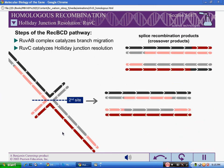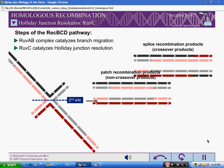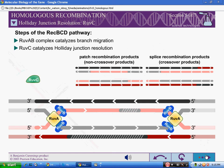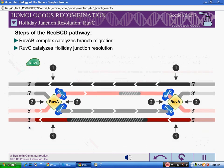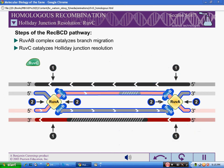In the REC-BCD pathway, this step is catalyzed by the RUVC endonuclease. For each Holliday junction, there are two possible cleavage sites. Site 1 consists of the two DNA strands that have not crossed over. Site 2 consists of the two DNA strands that have crossed over.